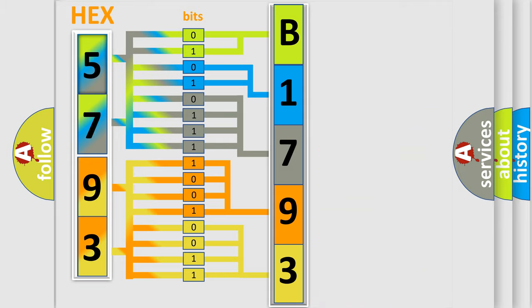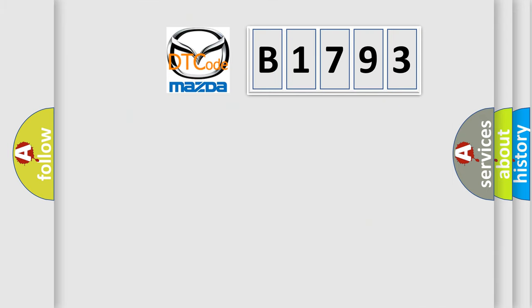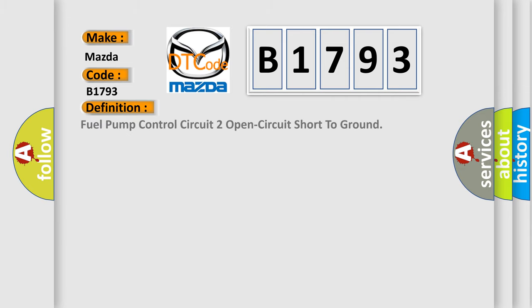We now know in what way the diagnostic tool translates the received information into a more comprehensible format. The number itself does not make sense to us if we cannot assign information about what it actually expresses. So, what does the diagnostic trouble code B1793 interpret specifically for Mazda car manufacturers?